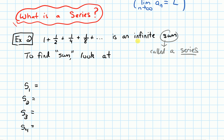In particular, what we're going to be looking at are infinite series. The main question we are going to be interested in is: sometimes when we add up an infinite amount of numbers, that will sort of converge — it'll have a finite sum. So if we want to find the sum of this infinite series, we are going to look at sequences of partial sums.